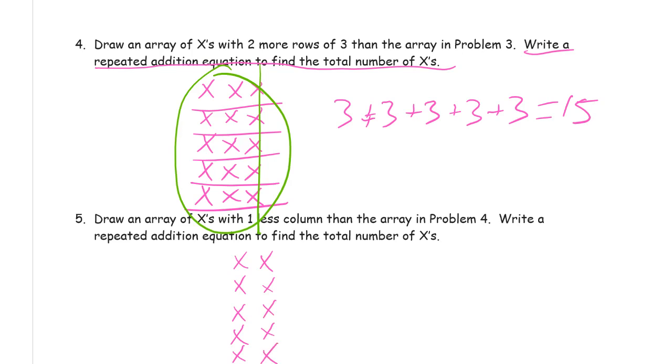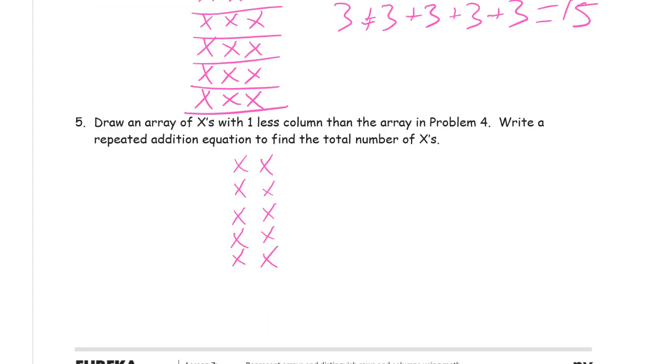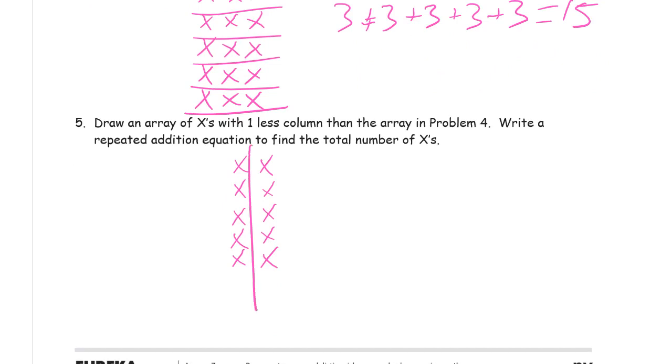And let me clean up this green stuff. And there's my vertical line because this time we're looking at columns so I want a vertical line to separate columns and write a repeated addition equation. And I'm looking at columns now. So I'm seeing five in each column. So I can just say five plus five equals ten.